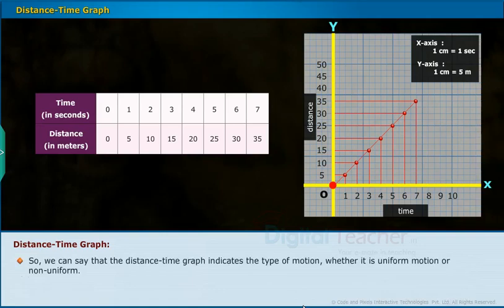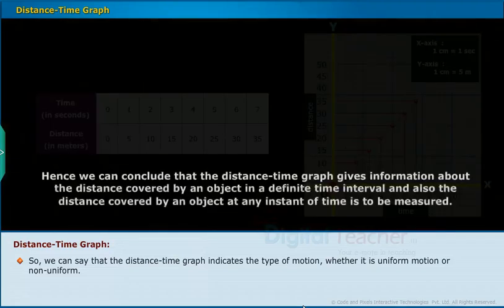So, we can say that the distance-time graph indicates the type of motion whether it is uniform motion or non-uniform. Hence, we can conclude that the distance-time graph gives information about the distance covered by an object in a definite time interval and also the distance covered by an object at any instant of time is to be measured.